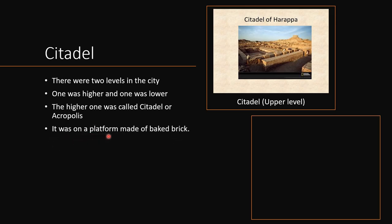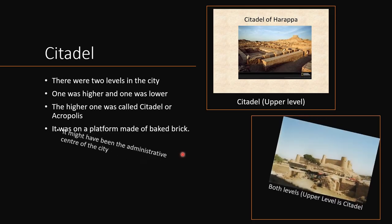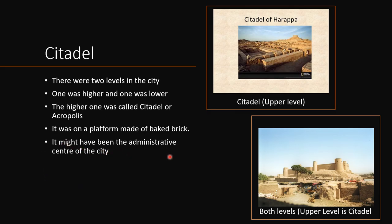The citadel was on a platform made of baked brick — not a small platform, but a very sturdy one which could hold a lot of weight. It might have been the administrative center of the city. The top level is the citadel and the lower one is the residential area, which we will learn about next.